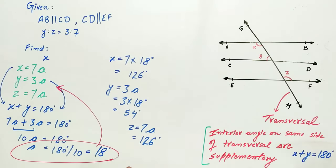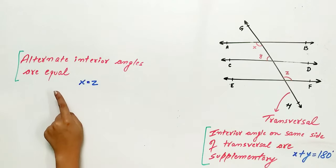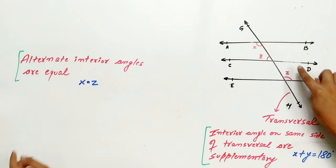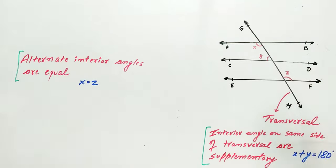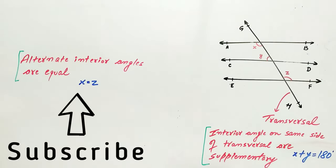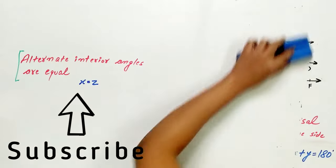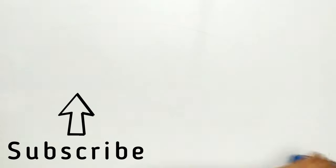This brings us to the end of this question. We have used these two identities to find out X, Y, and Z. If you have any doubt, let me know in the comment section. And do not forget to subscribe to the channel.